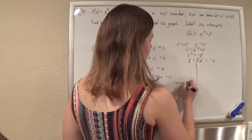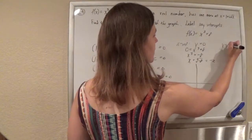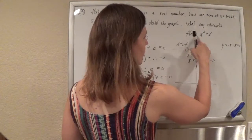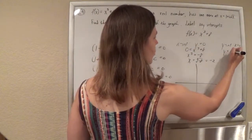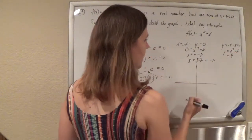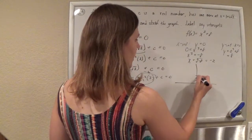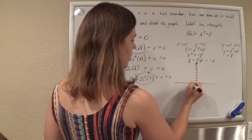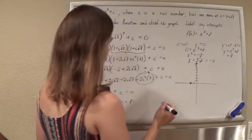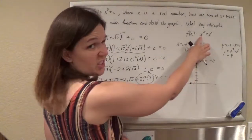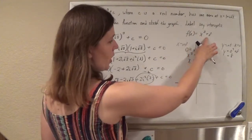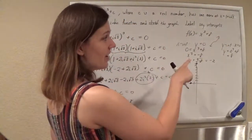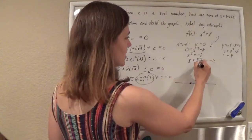For the y-intercept, that happens when x is 0, so y equals 0³ plus 8, which is 8. So I'll mark a y-intercept of 8 and an x-intercept of −2, and plot those. I can recognize this graph is just a cubic function shifted up 8, so it has that classic S-curve shape shifted up 8.